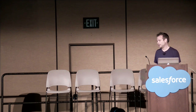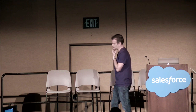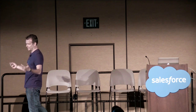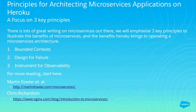Let's talk about principles for architecting microservice applications on Heroku. We provide a lot of primitives and operations, but that doesn't mean you magically get a scalable microservices organization. Three key principles: bounded contexts, designing for failure, and instrumenting for observability. Martin Fowler is a prolific writer on microservices, and Chris Richardson has good material on the Nginx blog as well.